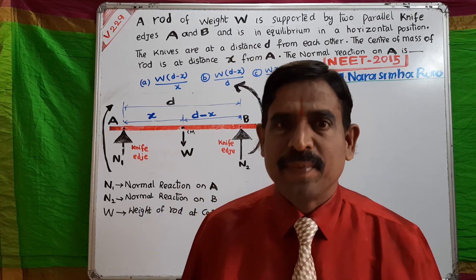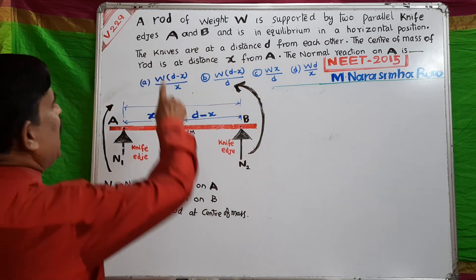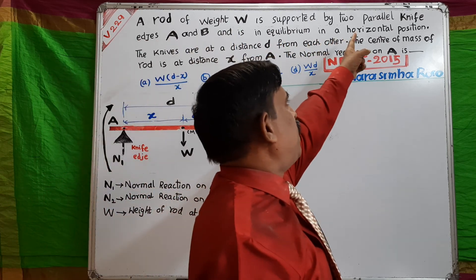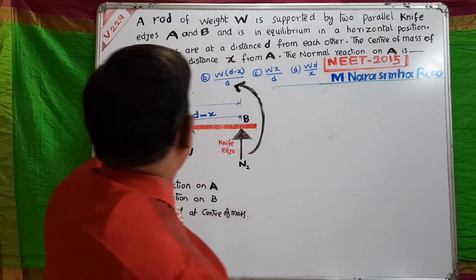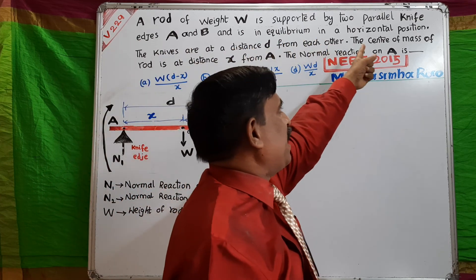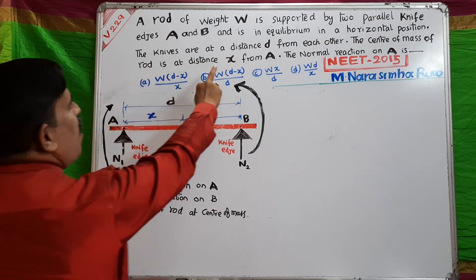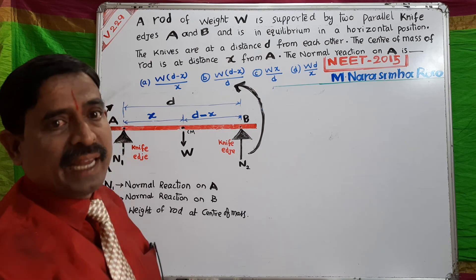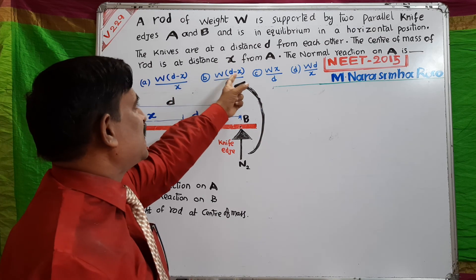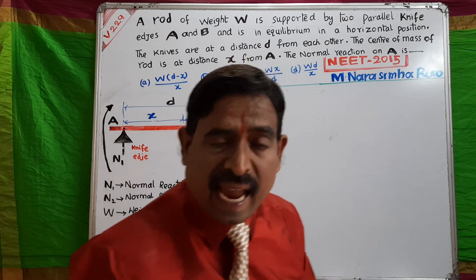My name is M. Narasimha Rao, Lecturer in Physics. A rod of weight W is supported by two parallel knife edges, capital A and capital B, and is in equilibrium in a horizontal position. The knives are at a distance D from each other. The center of mass of the rod is at a distance X from A. The normal reaction on A is...